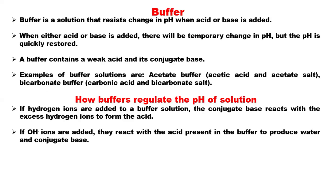What is a buffer? A buffer is a solution that resists change in pH. When an acid or a base is added to the solution, the solution resists changes in pH. There will be a temporary change in pH but the pH is quickly restored. A buffer contains a weak acid and its conjugate base. Examples of buffer solutions are acetic buffer — acetic acid and acetate salt — and bicarbonate buffer — carbonic acid and bicarbonate salt.